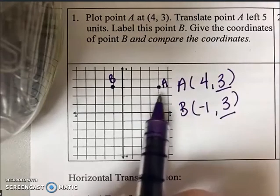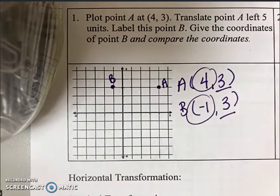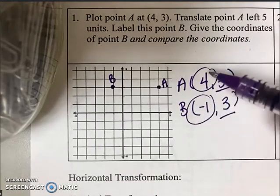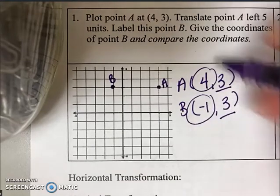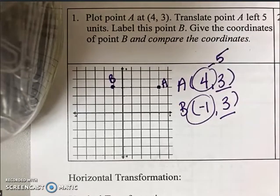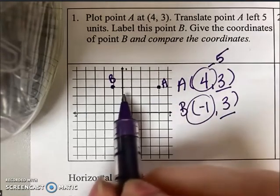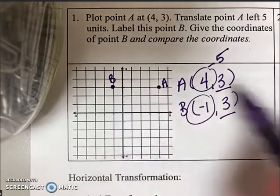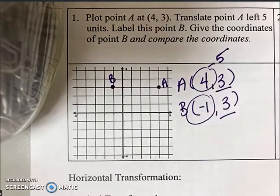However, I did move it left. So if we compare the X values, they're different. To get from four to negative one, we subtract five. When we were reviewing linear functions, moving left is a negative movement, so it makes sense to subtract five from our original X value to get our new X value of negative one.